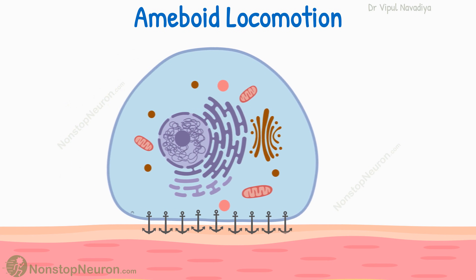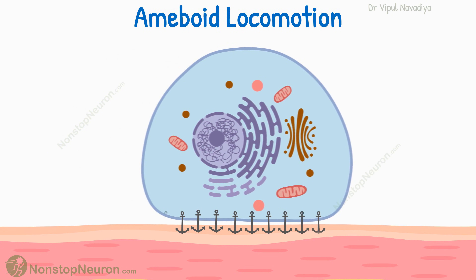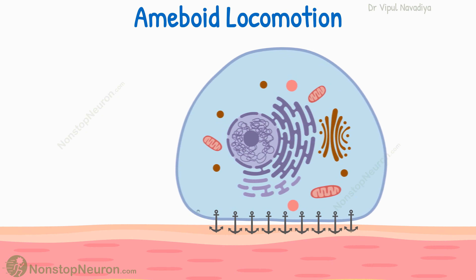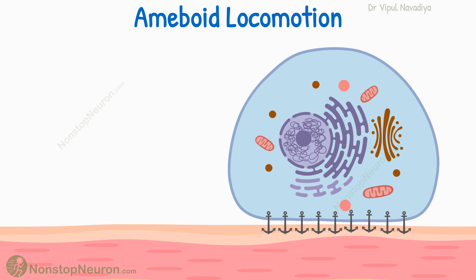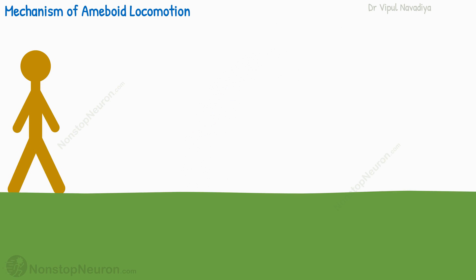Amoeboid locomotion is basically the migration of the entire cell in relation to its surrounding. Before we see how the cell actually moves, let me give you an analogy that will help you understand the mechanism of amoeboid locomotion later on.